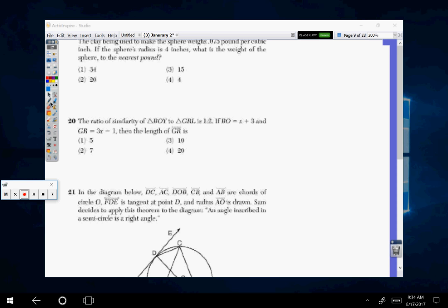Okay, in number 20 it says that the ratio of similarity of triangle B-O-Y to triangle G-R-L is 1 to 2.